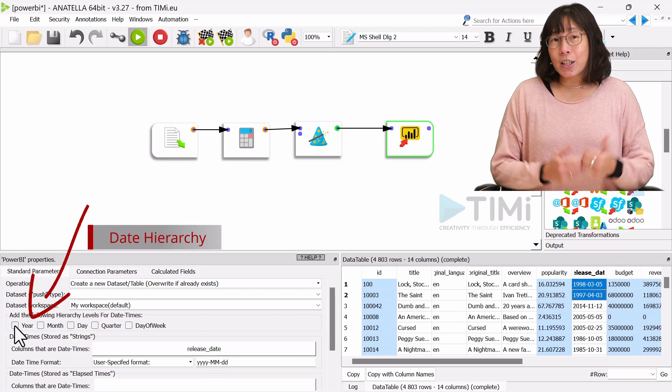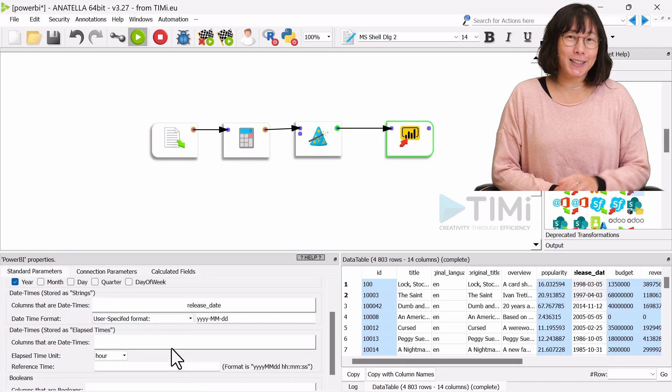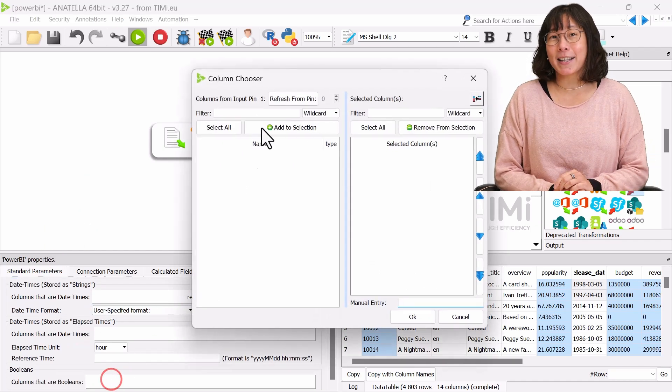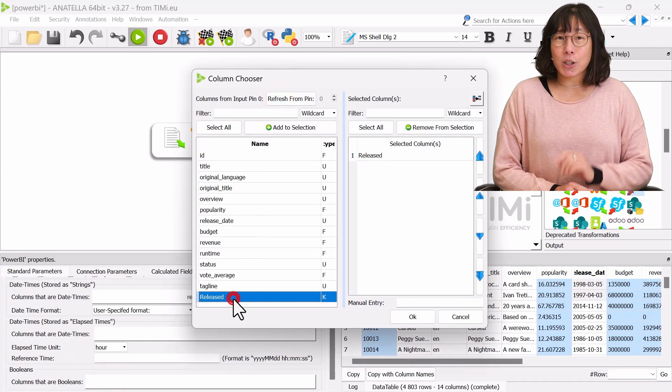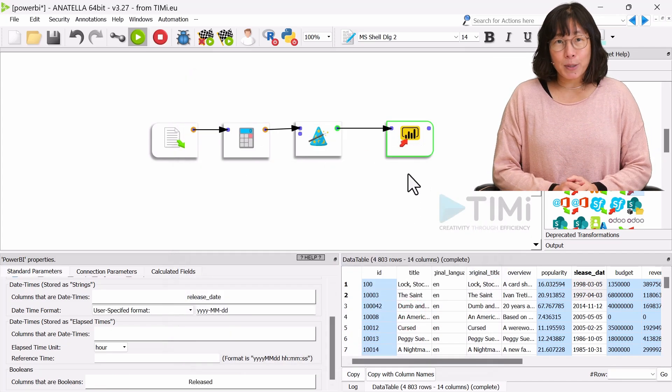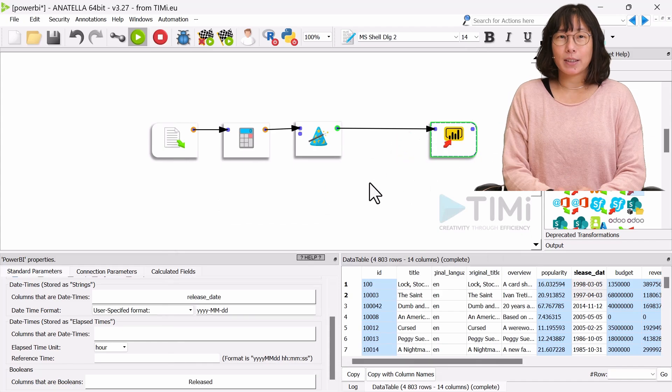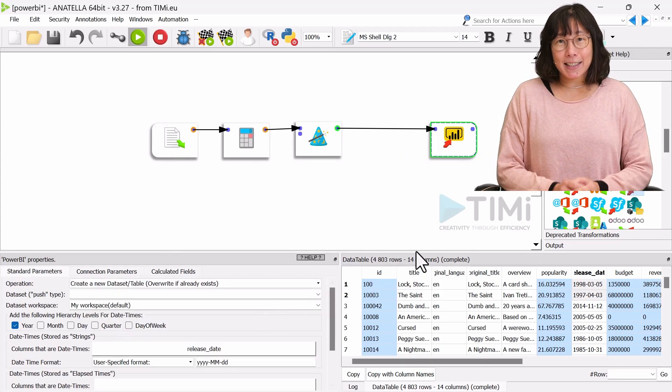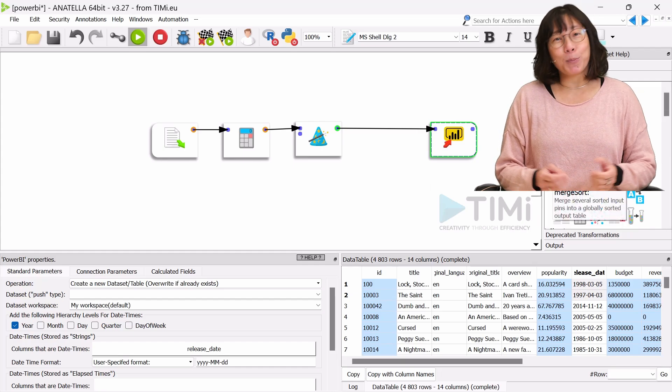We can additionally create a whole hierarchy for the date columns. Here, we select only the year in the date hierarchy. Let's also specify that the release column is a boolean variable.